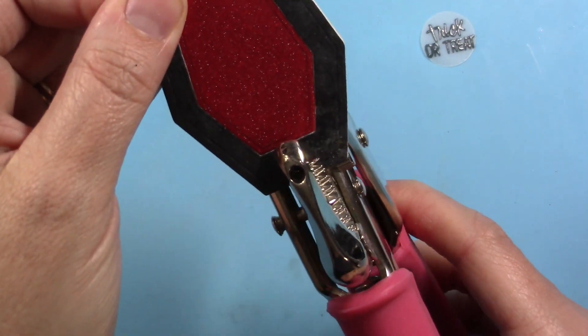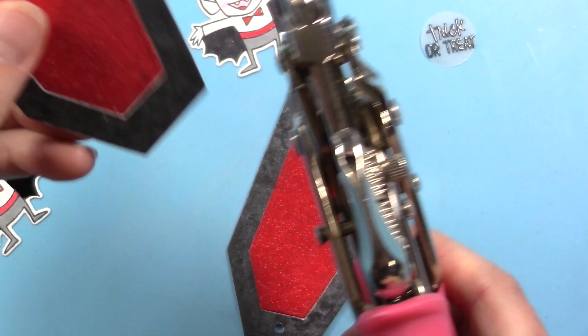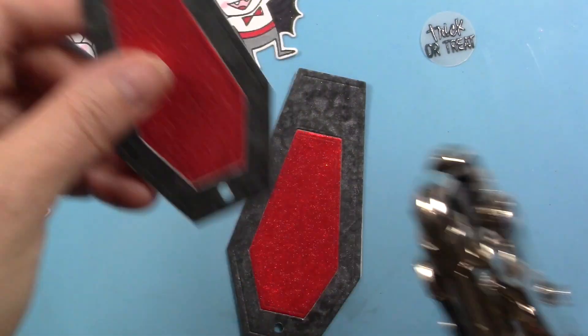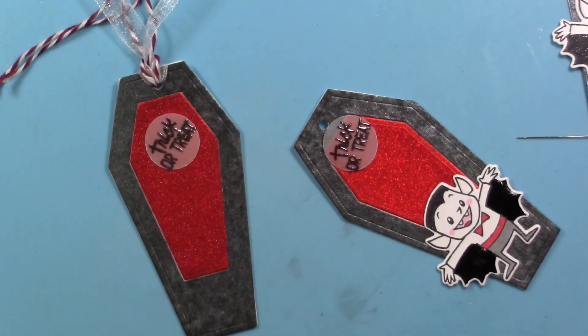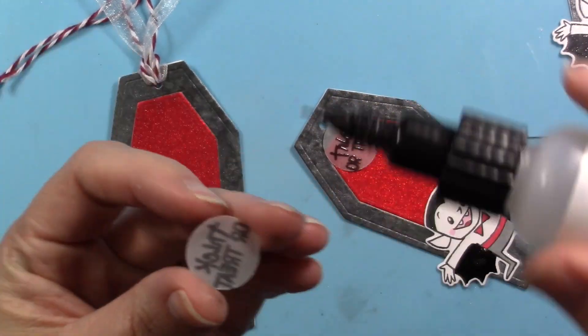So next, in order to make a tag, I'm going to take my Crop-A-Dile and just punch some holes in the top of these little coffins in each one, and then I'll be adding a little bit of twine and ribbon to those so that I can tie them onto goodie bags.